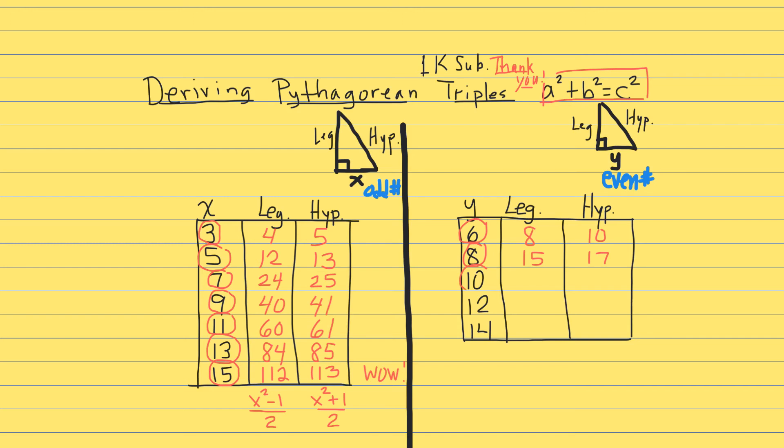That means that 8 squared plus 15 squared is equal to 17 squared. Moving right along, the next one is 10. Take half of 10, that's 5. 5 squared is 25, so 25 is between these two, so we just go one down and one up: 24 and 26. So 10 squared plus 24 squared is equal to 26 squared.